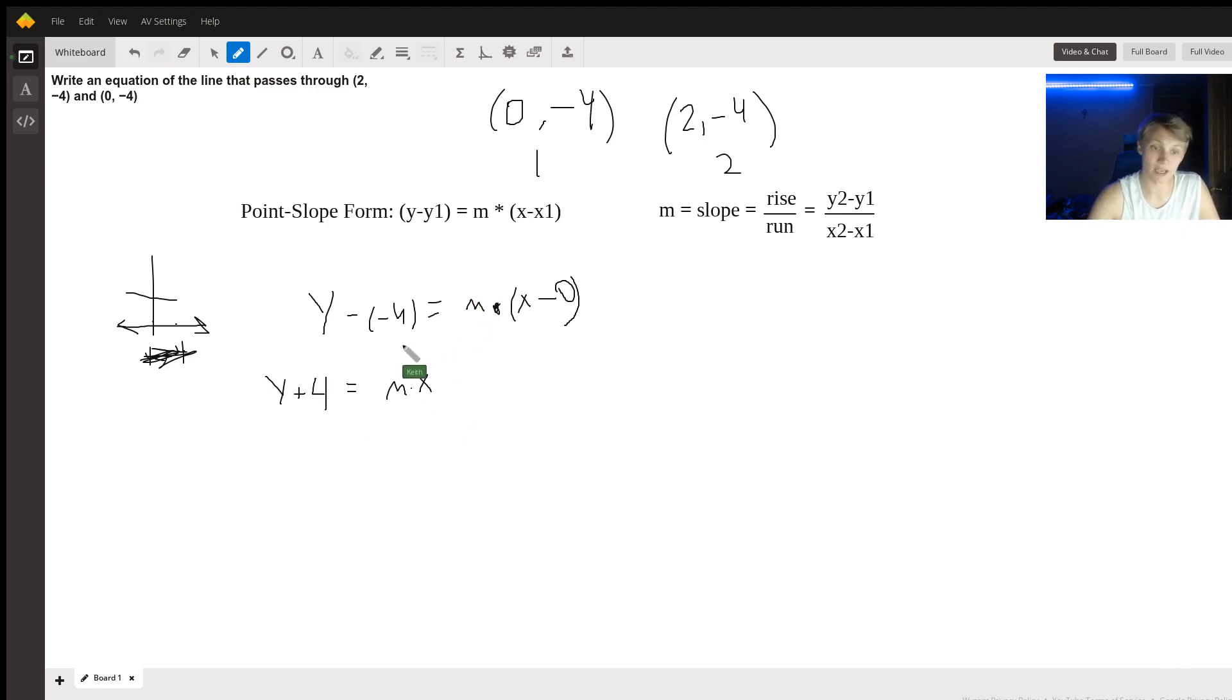But at this point we need to figure out what m is. And m, your slope, is just rise over run, right? How fast are you going up compared to how fast are you going side to side? So here we're going to use both y2 and y1.